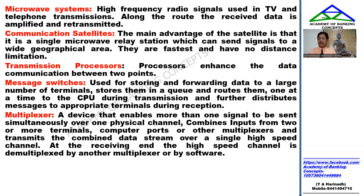In a single system, data is transmitted from one point to another and then separated at the destination. This is called a multiplexer. The same concept applies in networking, where separate software is used for the multiplexing purpose.